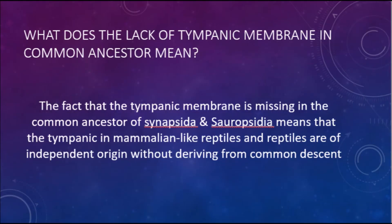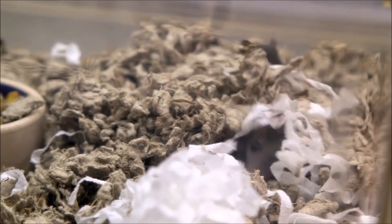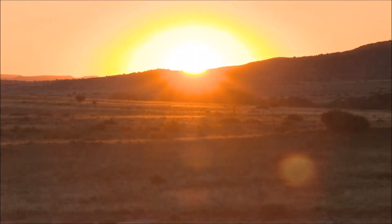This means that the eardrums found in synapsids and reptiles appeared independently, meaning that ears of reptiles, birds, and the ears of mammalian-like animals do not share a common origin together that can be traced by the lines of common descent.